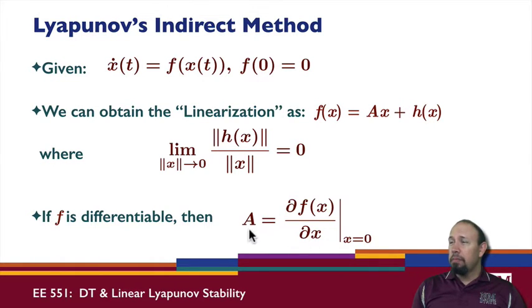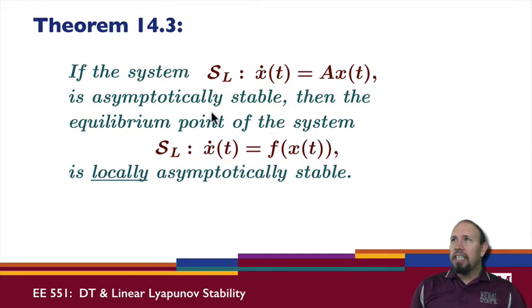So now we have a linearized system x dot is equal to Ax, where A is given by this expression. And so the text basically says this, if the system, the linear system, x dot is equal to Ax is asymptotically stable, then the equilibrium point of the original system is locally asymptotically stable.